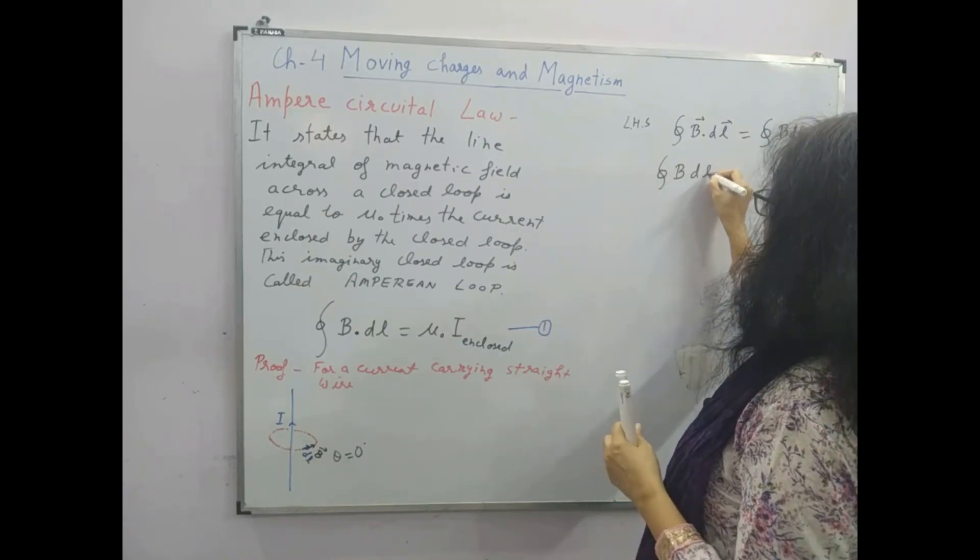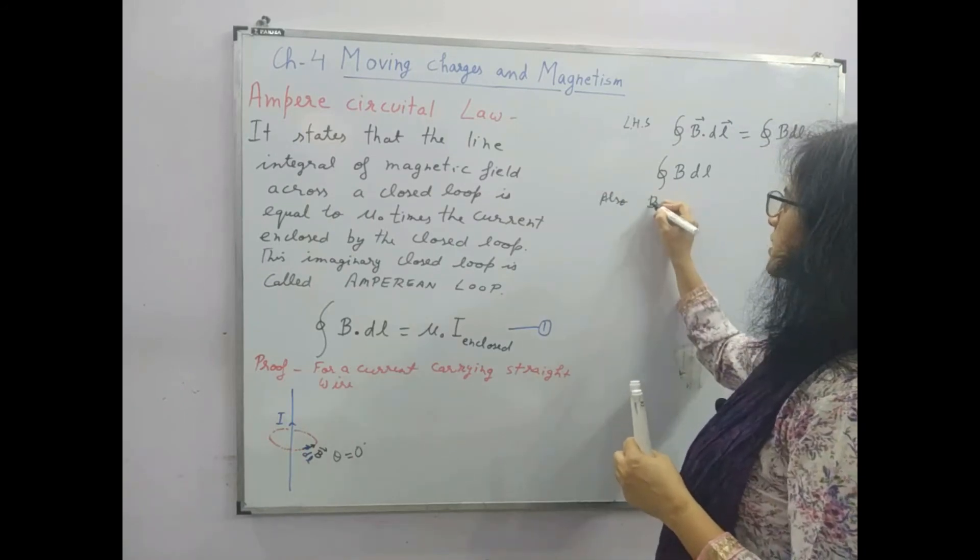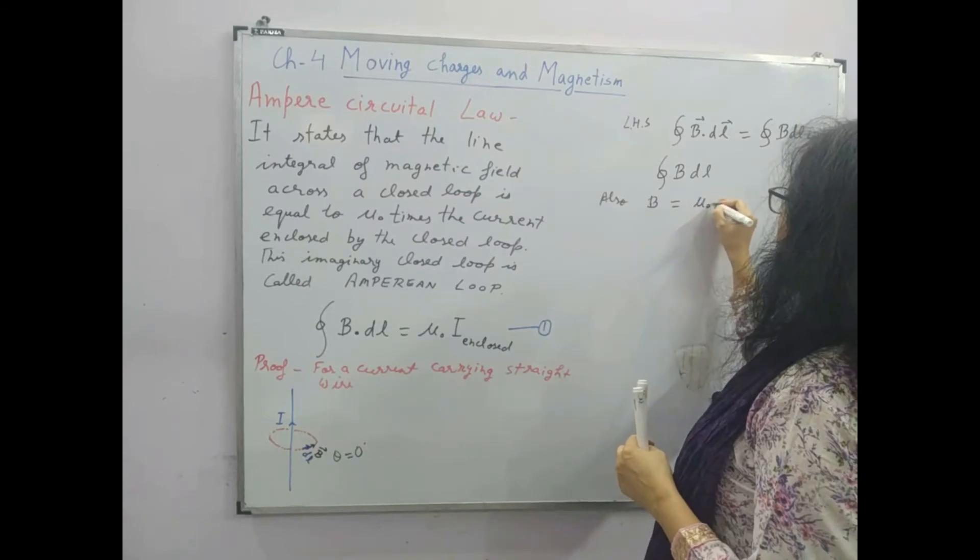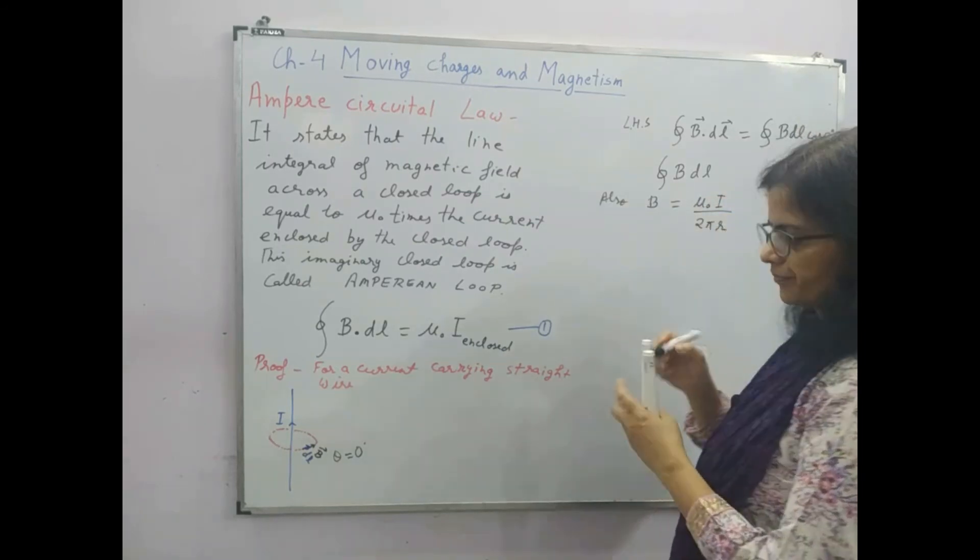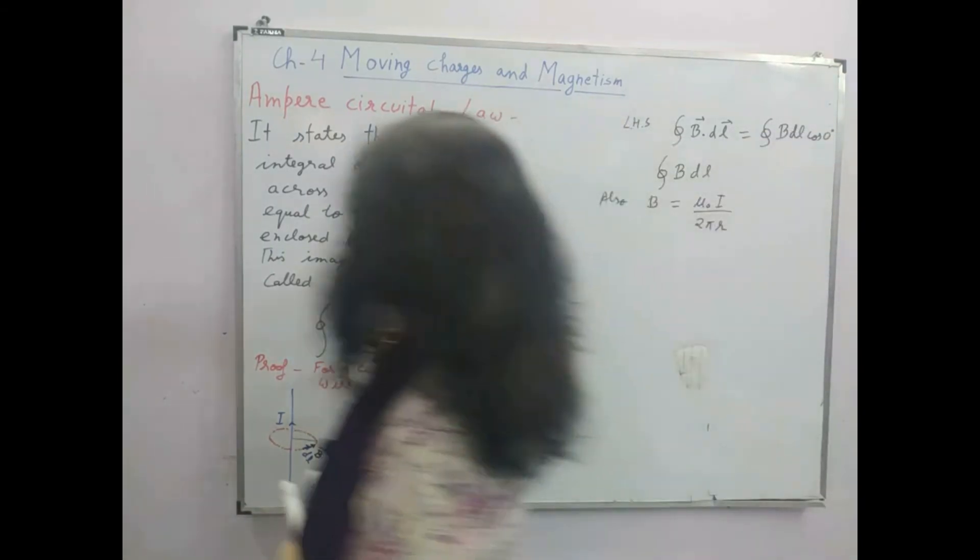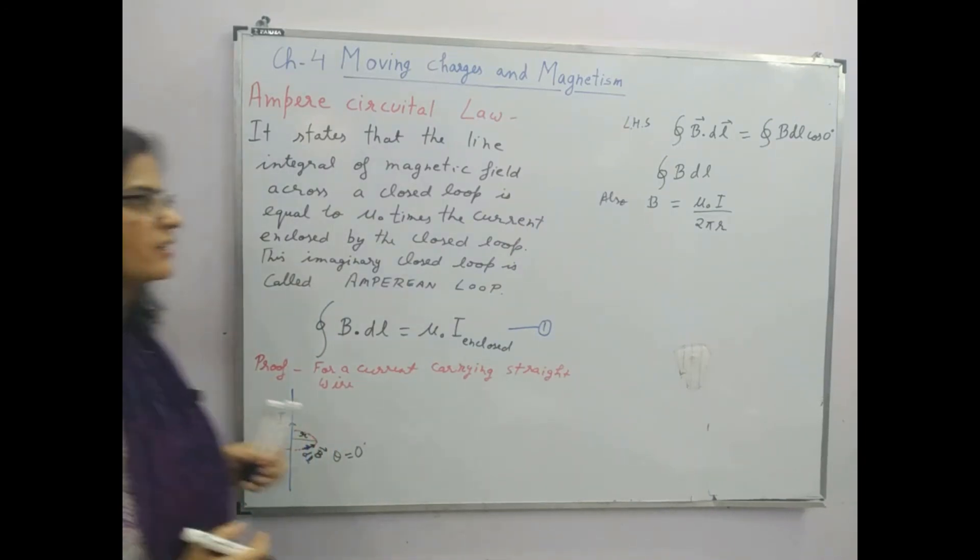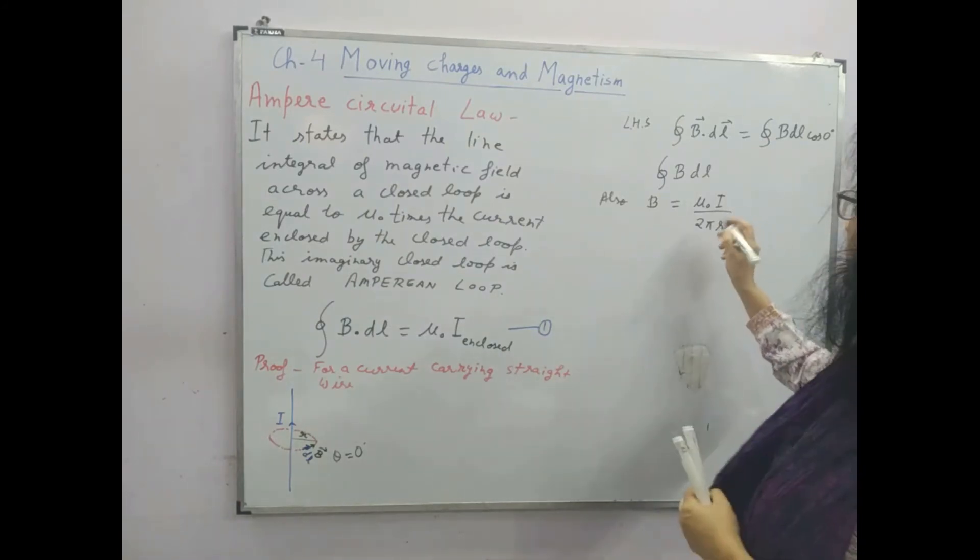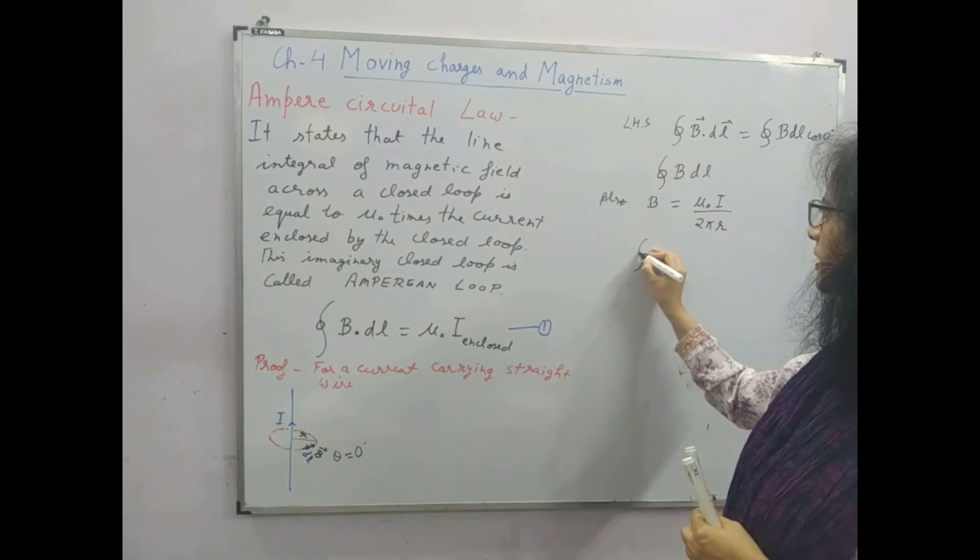Also we know that the magnetic field due to a straight wire at distance r is mu 0 i upon 2 pi r. If r is the radius of this loop and we are finding the magnetic field at a point on this Amperean Loop, so this will be mu 0 i upon 2 pi r. So therefore the expression becomes mu 0 i upon 2 pi r into dl.